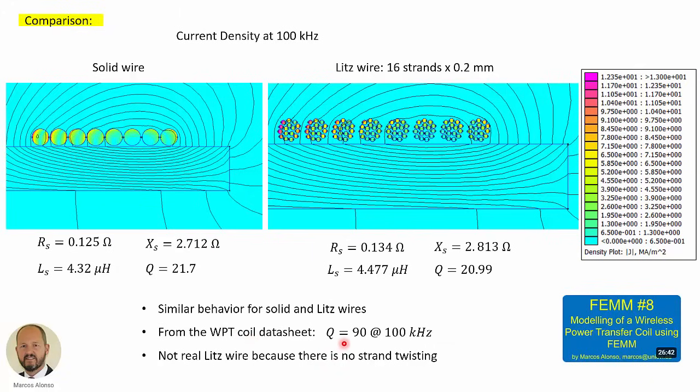But from the WPT coil data sheet, we should get a value of quality factor equal to 90 at 100 kHz. In previous video, we even tried smaller diameters. Also, even in other videos, we tried flat conductors. But the result is the same because at the end, the problem is that this is not real Litz wire because there is not twisting between the different strands.